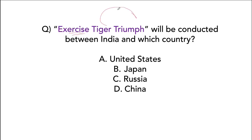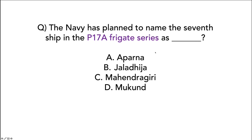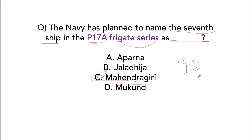The military exercise Tiger Triumph will be conducted between India and the US, taking place in Visakhapatnam and Kakinada in Andhra Pradesh. The Navy has named the seventh ship in the P-17A frigate series as Mahendragiri. The previous ships were named Nilgiri, Himgiri, Udaygiri, Dunagiri, Taragiri and Vindhyagiri.